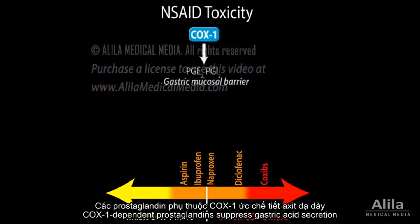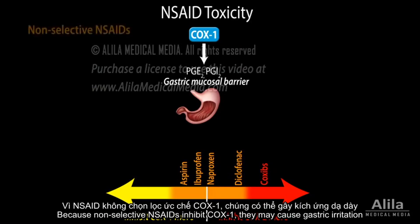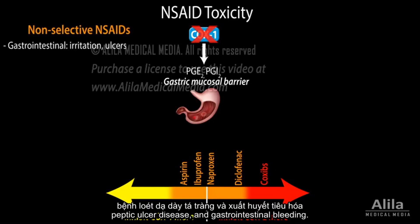Aspirin is also linked to Reye's syndrome. COX1-dependent prostaglandins suppress gastric acid secretion and help maintain the gastric mucosal barrier, providing protection to the stomach lining. Because non-selective NSAIDs inhibit COX1, they may cause gastric irritation, peptic ulcer disease, and gastrointestinal bleeding.